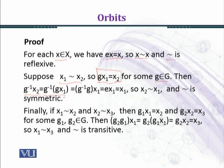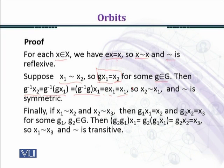Using the second condition: this is equal to g⁻¹·(g·x₁). Since g⁻¹·g gives the identity element, this equals e·x₁, which equals x₁. So we can see that g⁻¹·x₂ equals x₁, which implies x₂ relates to x₁, and this relation is symmetric.